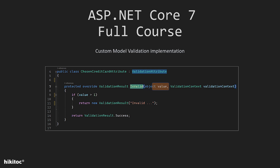Now let's discuss the parameters. The first parameter, which is the value object, represents the value to validate. When we apply our custom validation attribute to a property or parameter, the value parameter contains the value of that property or parameter received from a client. The ValidationContext parameter provides information about the context in which the validation is occurring, including details such as the object being validated and the member — like property, field, or parameter — being validated.